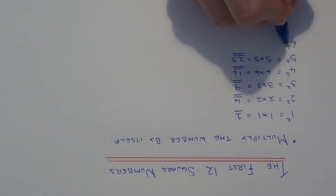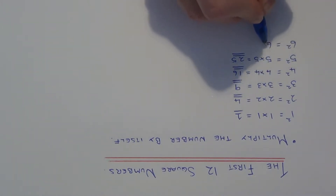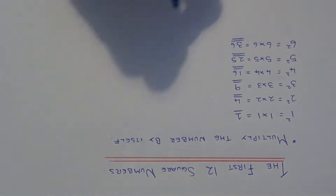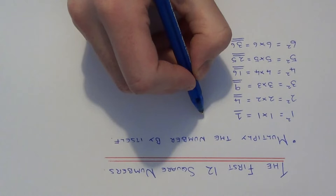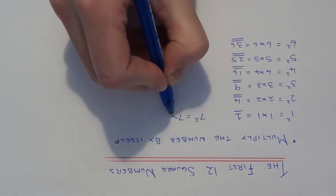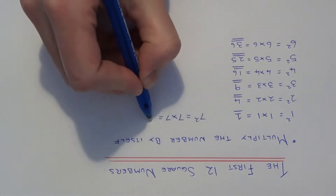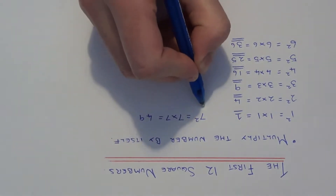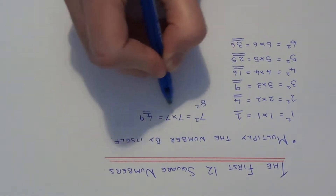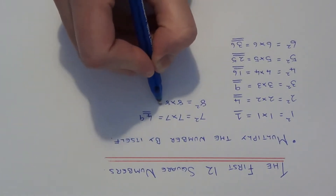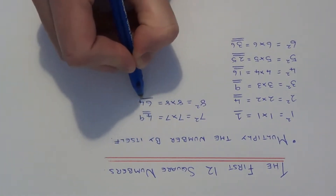The next one will be 6 squared, which is 6 times 6, which gives us 36. The next one will be 7 squared, which is 7 times 7, and that is 49. The next one will be 8 squared, which is 8 times 8, which is 64.